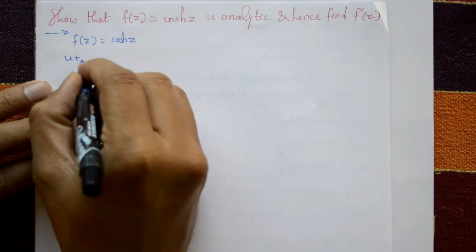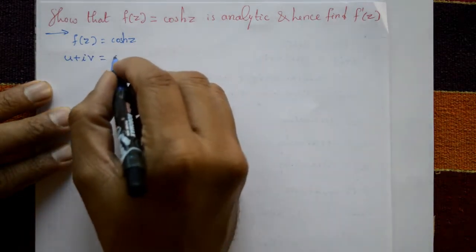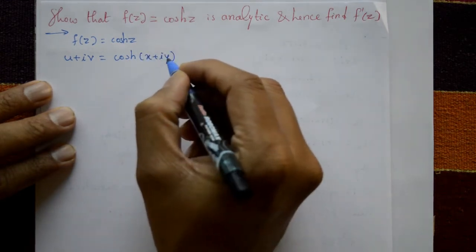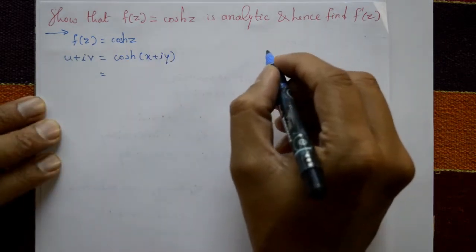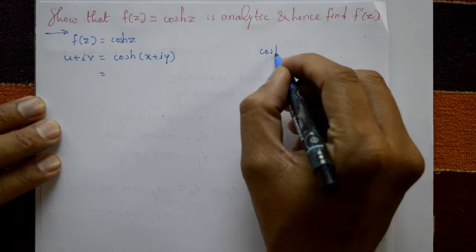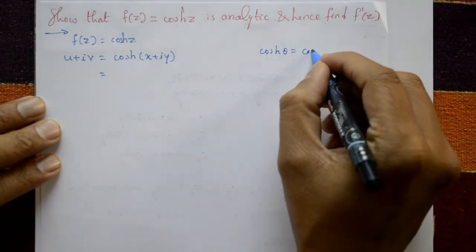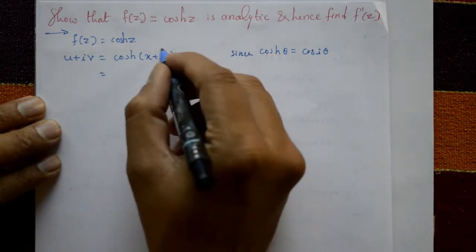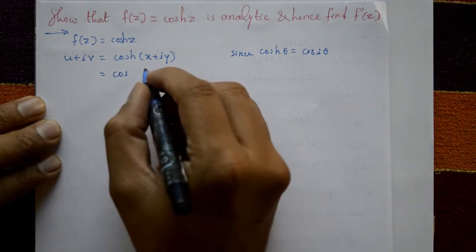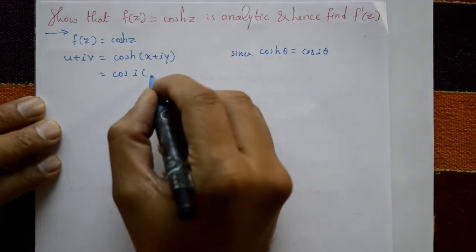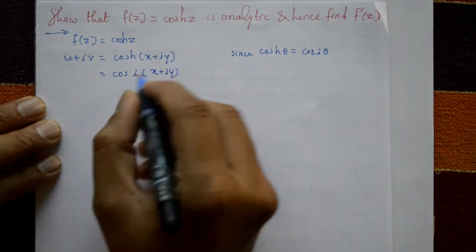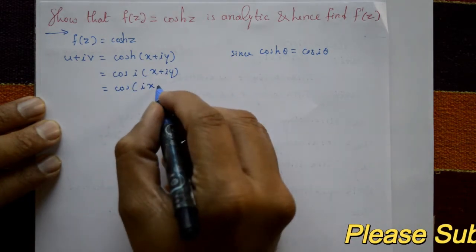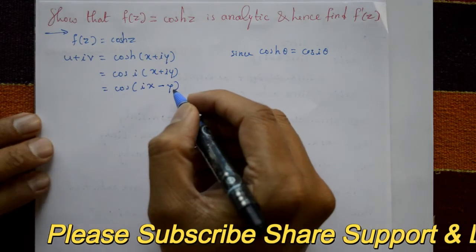f(z) = u + iv and cosh(z) means cosh(x + iy). Now, you know that cosh(θ) = cos(iθ), so this becomes cos(i(x + iy)) = cos(ix + i²y) = cos(ix - y).